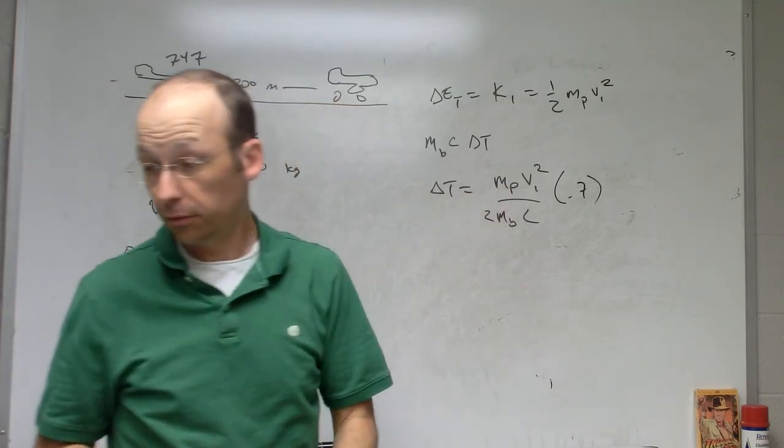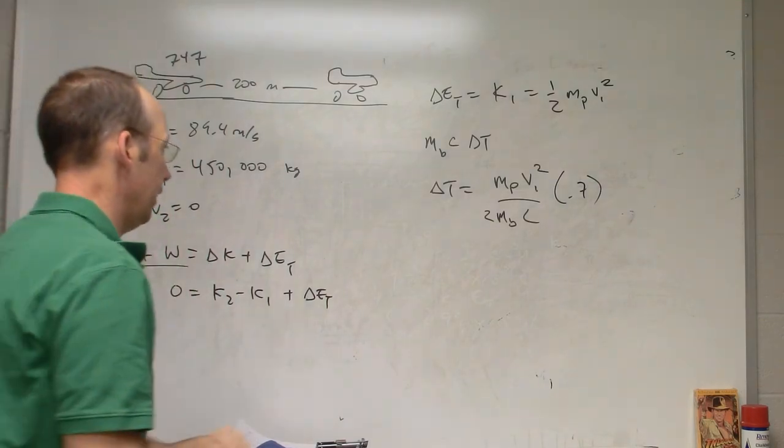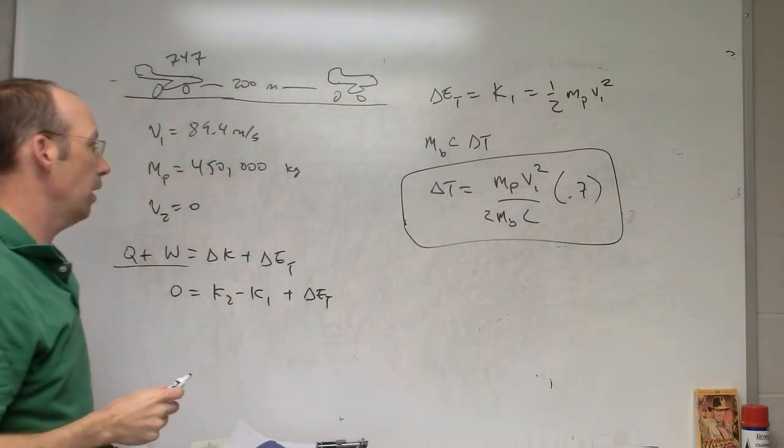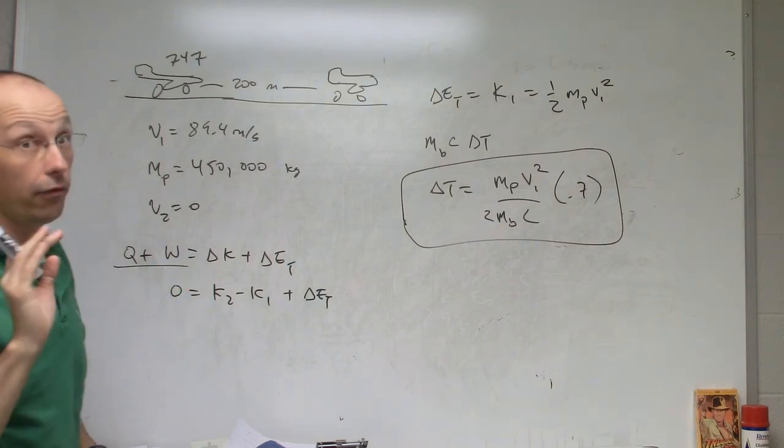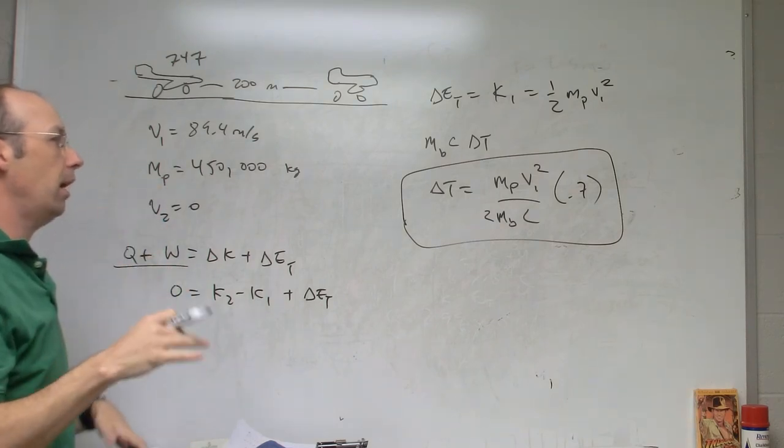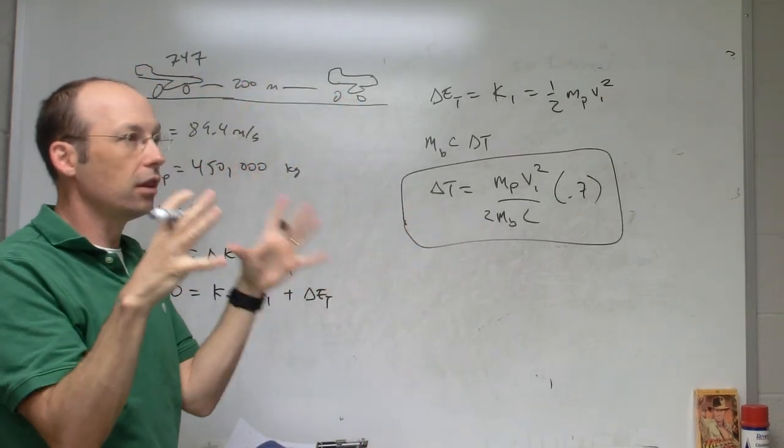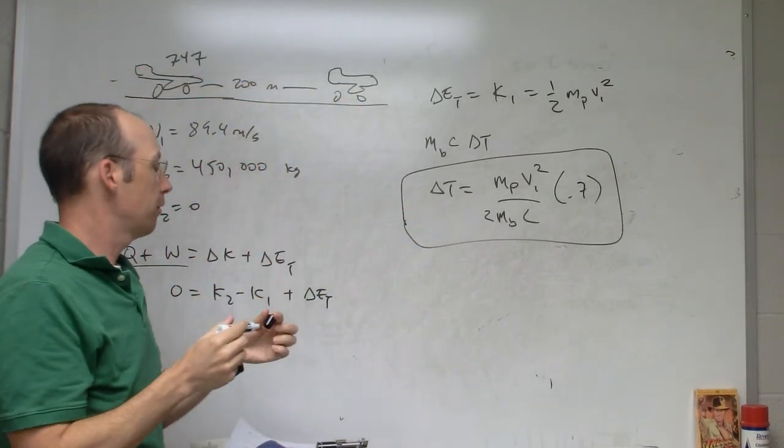So now all I have to do is put in the mass of the plane, I've got that, the mass of the brakes and the specific heat of the brakes. I didn't write that down, but I gave you those numbers online. So you just put those in. They get really hot. If you, there's a video online that shows the plane stops and the brake pads were just glowing red. They're so hot. It's pretty awesome.